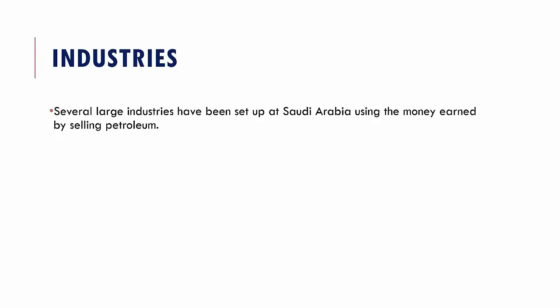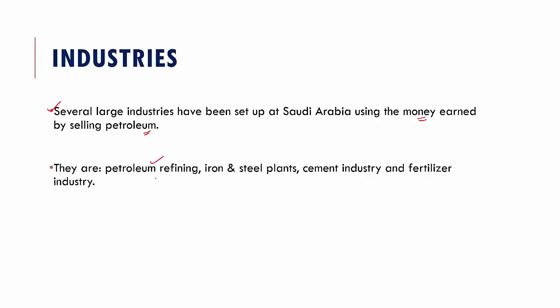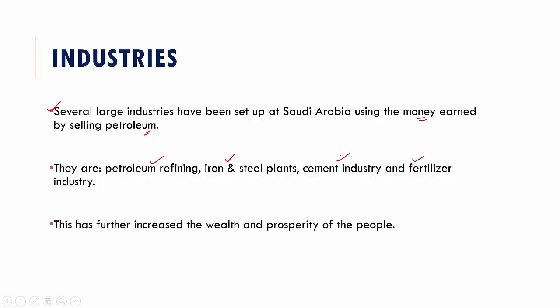Saudi Arabia has set up several large industries using money earned from selling petroleum. These include petroleum refining industries, iron and steel industries, cement industries, and fertilizer industries. This has led to increased wealth and prosperity for the people of Saudi Arabia.